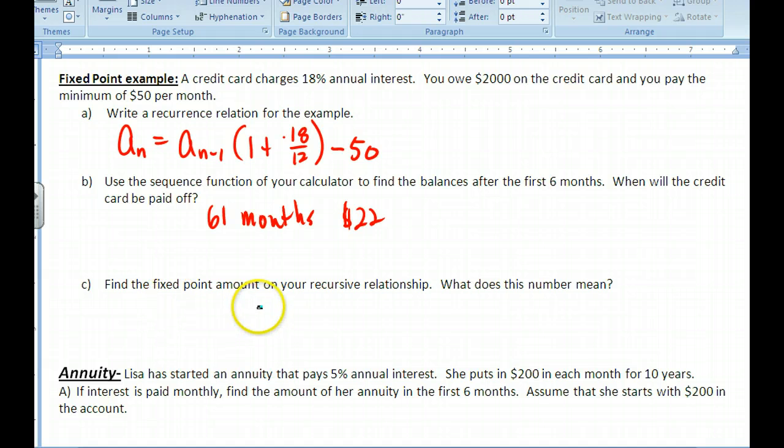So this one is 61 months, and our final payment was about $22. And then now this last part, point C, find the fixed point amount of your recursive relationship. What does that mean? Well, that means that now is the same thing as the next term. So each one is the same. So if I set this up and solve, you can go.